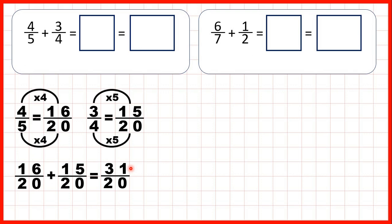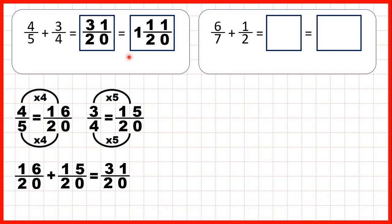As an improper fraction, our answer is thirty-one-twentieths. That's one and eleven-twentieths as a mixed number, because thirty-one divided by twenty is one remainder eleven, and the denominator stays the same.